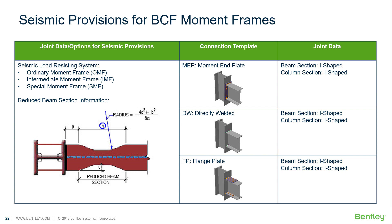Within RAM Connections Standalone we have three different types of connections available for beam-to-column moment frames to assist with seismic provisions. These include your moment end plate, a directly welded connection, and also a flange plated connection.